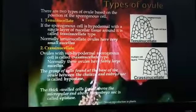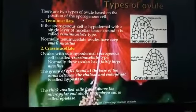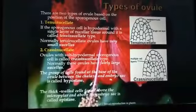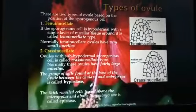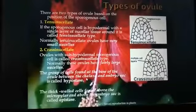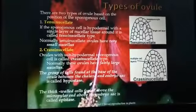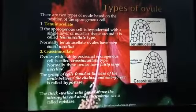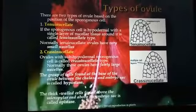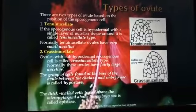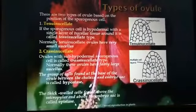The group of cells found at the base of the ovule between the chalaza and the embryo sac is called the hypostase. The chalaza is the opposite end of the micropyle where the integuments, nucellus, and funicle meet together. Below the chalaza, the hypodermal cells present are called the hypostase. Similarly, the group of cells located above the micropylar end is known as the epistase.